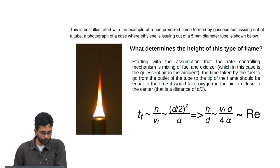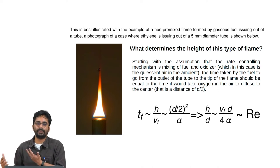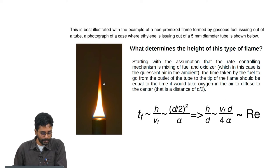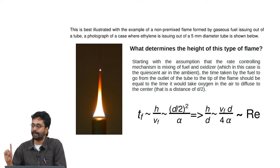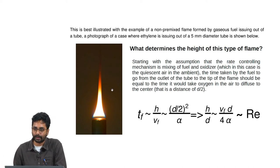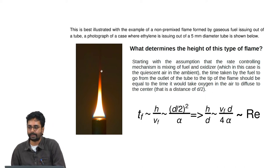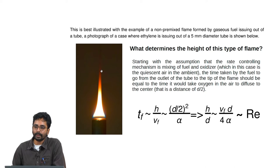The fuel comes out of the tube, and almost all the fuel is consumed at the flame tip. That means the stoichiometric amount of oxygen required to burn all the fuel must have entered the volume surrounding the flame within that height. A diffusion flame is always stoichiometric wherever reaction happens.